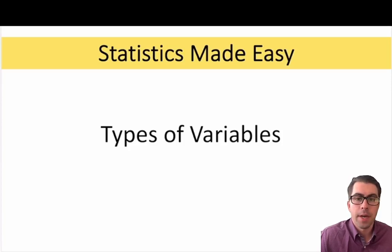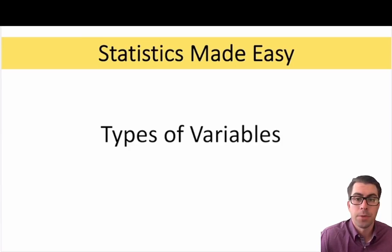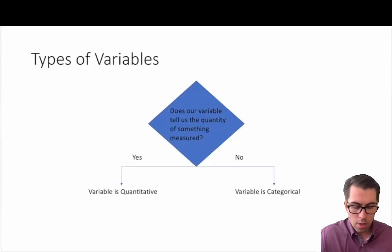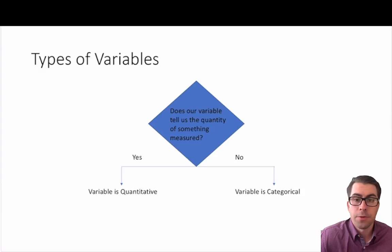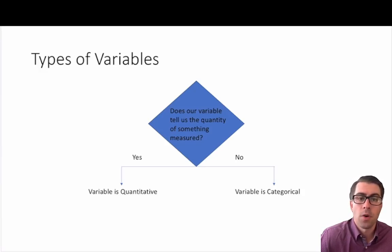In today's video we're going to be talking about types of variables and how to differentiate between those variables which are quantitative and those which are categorical. When working with different types of variables we either have quantitative variables or categorical variables, and to tell the difference between the two, all we have to do is ask ourselves a fairly easy question: does our variable tell us the quantity of something that is being measured?